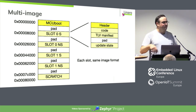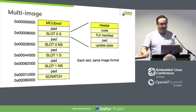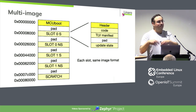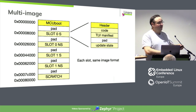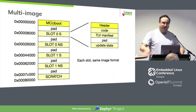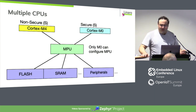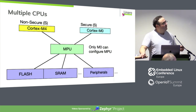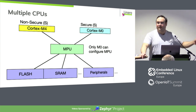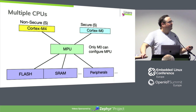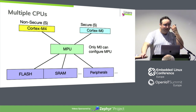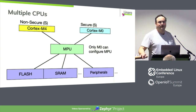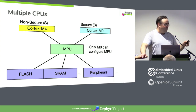What the bootloader now does is decide: are the secure and non-secure images both valid before we can boot? Then it starts the two processors running. We also have two slots for upgrades — if there's a new version of the non-secure code but we want to keep the same secure code, that gets placed into slot 1 non-secure. The bootloader decides the non-secure image needs to be updated, the secure one is fine, does the upgrade, checks everything is valid, and starts running both images.